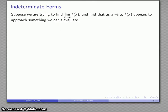So for example, suppose we're trying to find the limit as x approaches a, and it appears that our limit is something we can't evaluate. For example, the limit of x squared minus 5x plus 6 over x squared plus 5x minus 14 as x gets close to 2.